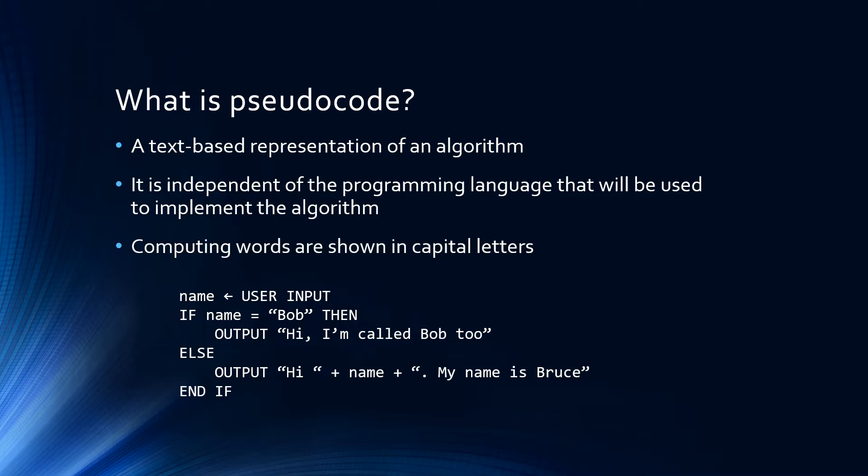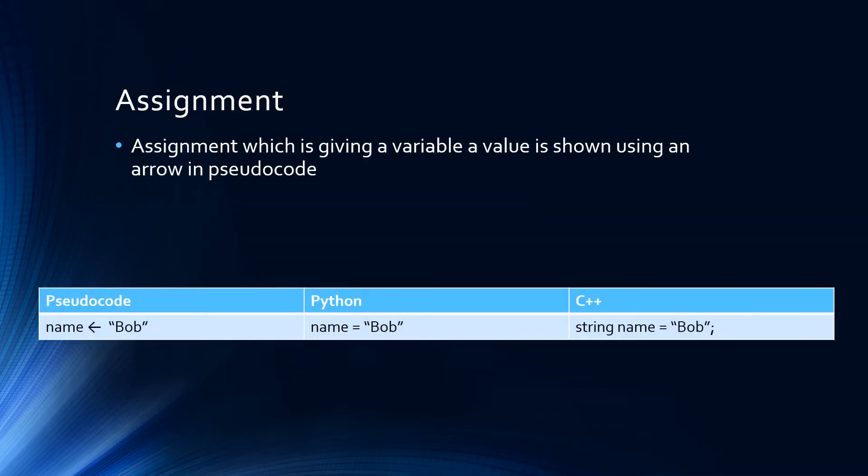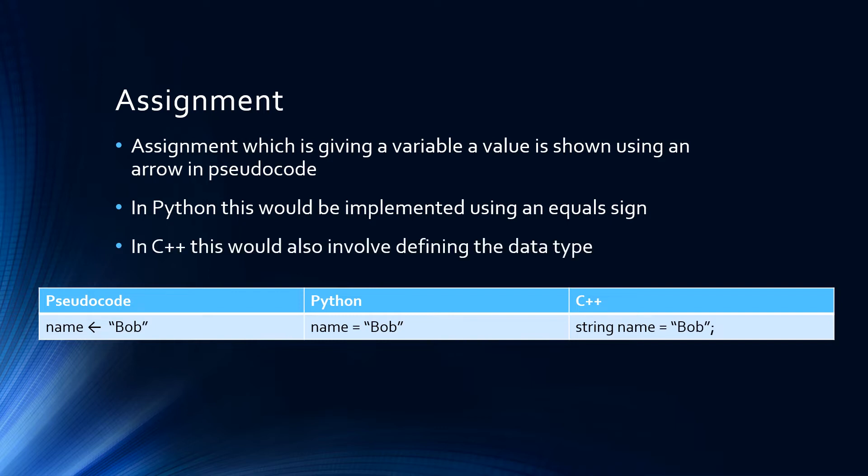Computing words in pseudocode are generally shown in capital letters. Assignment, or the process of giving a variable a value or a new value, is shown by a left-facing arrow in pseudocode. In Python it would be implemented with an equal sign. In C++ it would also be implemented with an equal sign, but declaring that variable would also require you to state the data type that it's going to use and include a semicolon on the end.